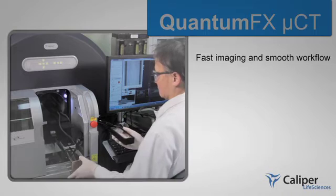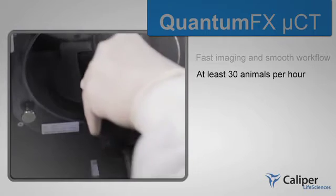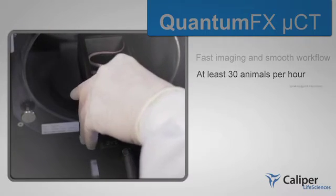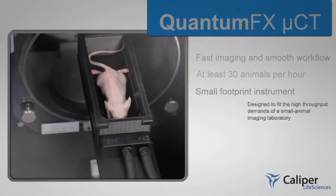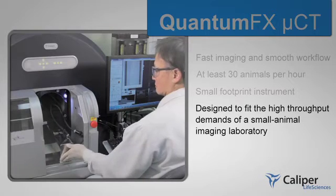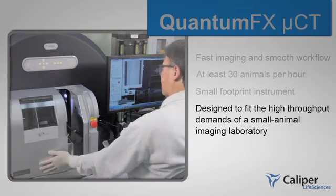The fast imaging and smooth workflow achieved with the QuantumFX enable throughput of up to 30 animals per hour. The small footprint instrument is designed to fit the space constraints and high throughput demands of a small animal imaging laboratory.